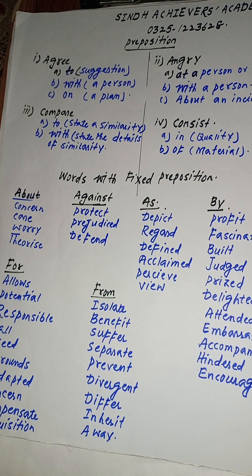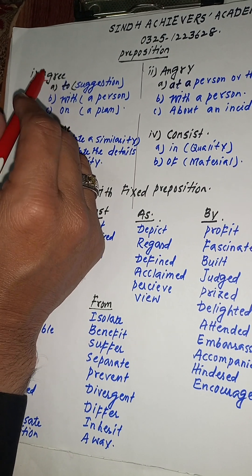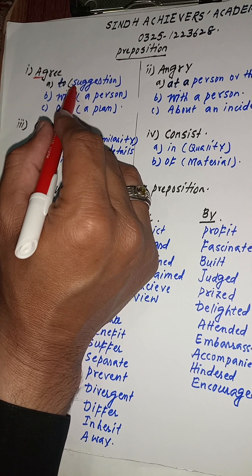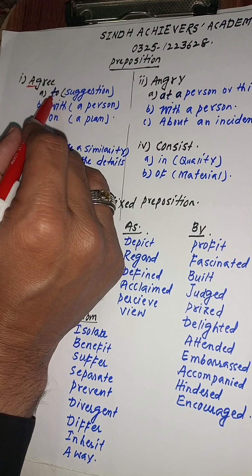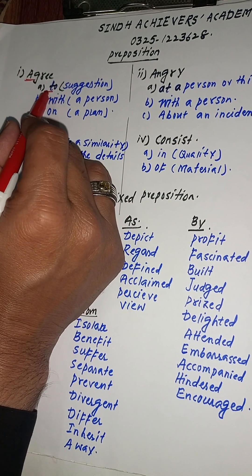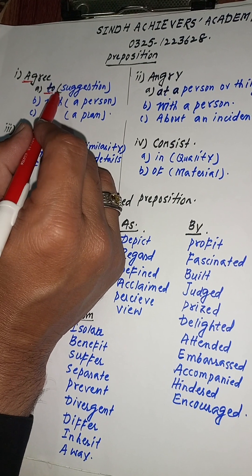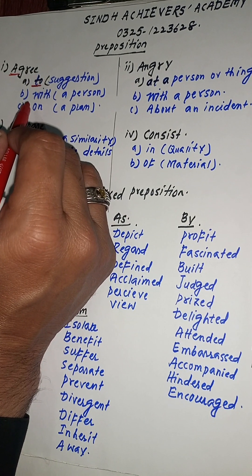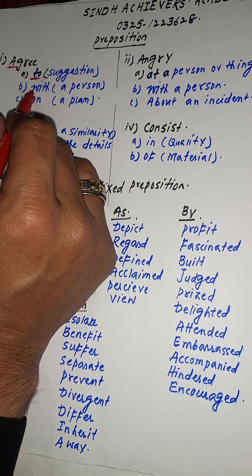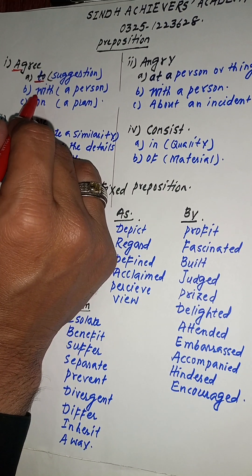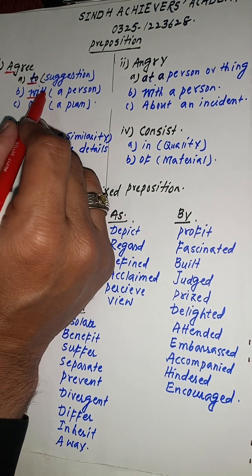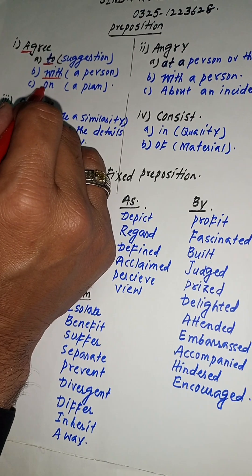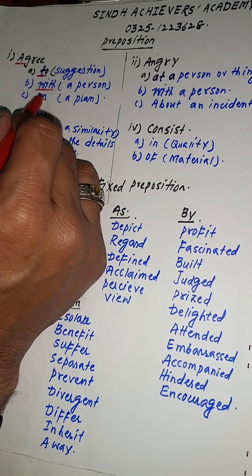We have the word AGREE. When we agree with a suggestion, opinion, or idea, we use 'agree to'. When we agree with a person, we use 'agree with'. When we agree on a proposal or plan, we use 'agree on'.